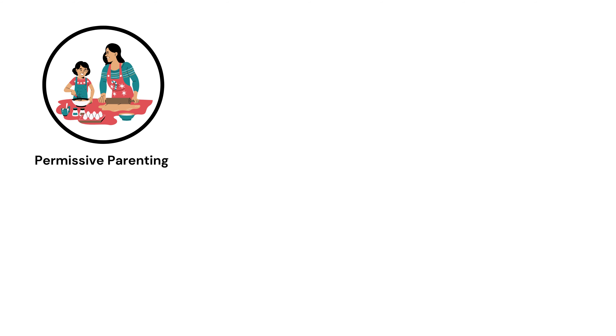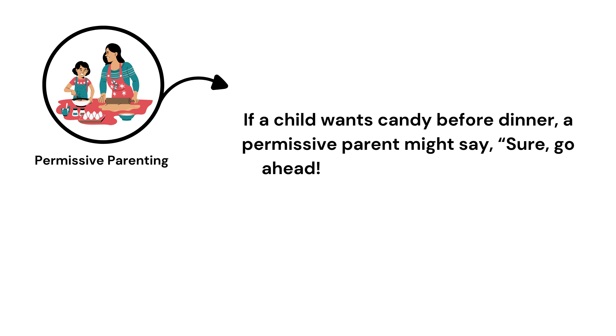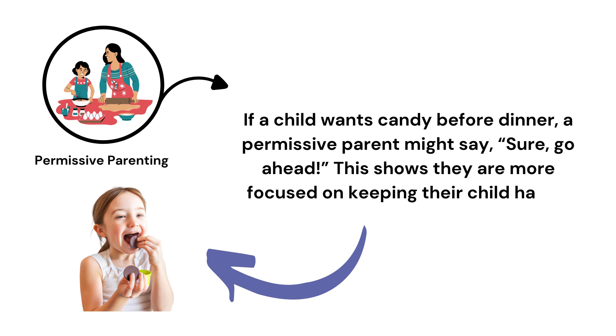Example: If a child wants candy before dinner, a permissive parent might say, 'Sure, go ahead.' This shows they are more focused on keeping their child happy than enforcing rules.